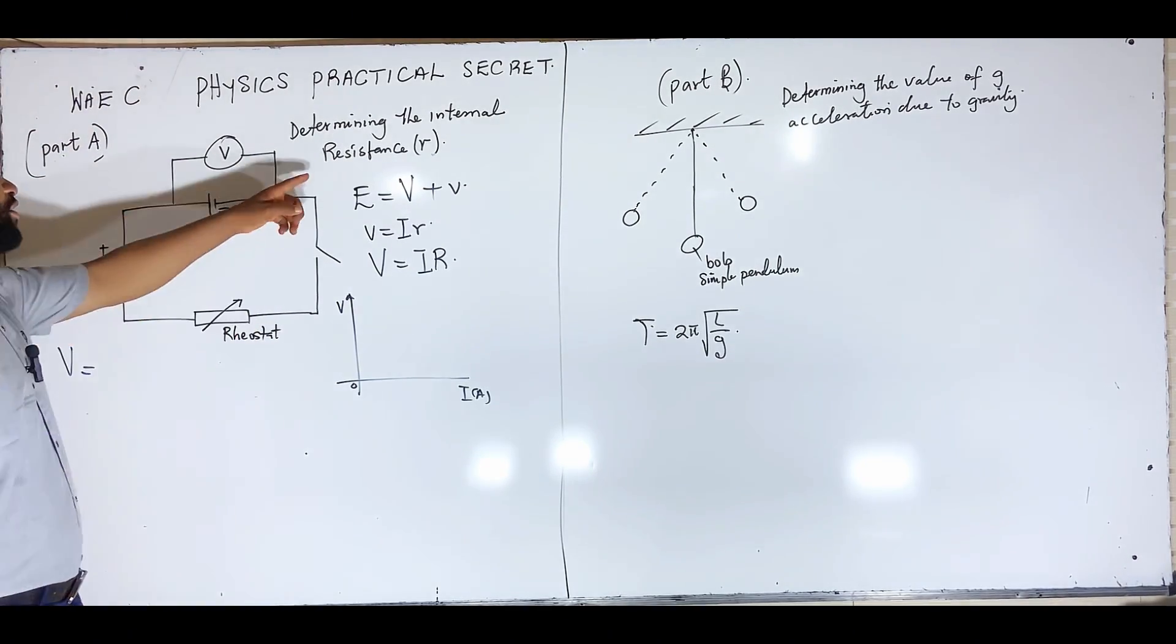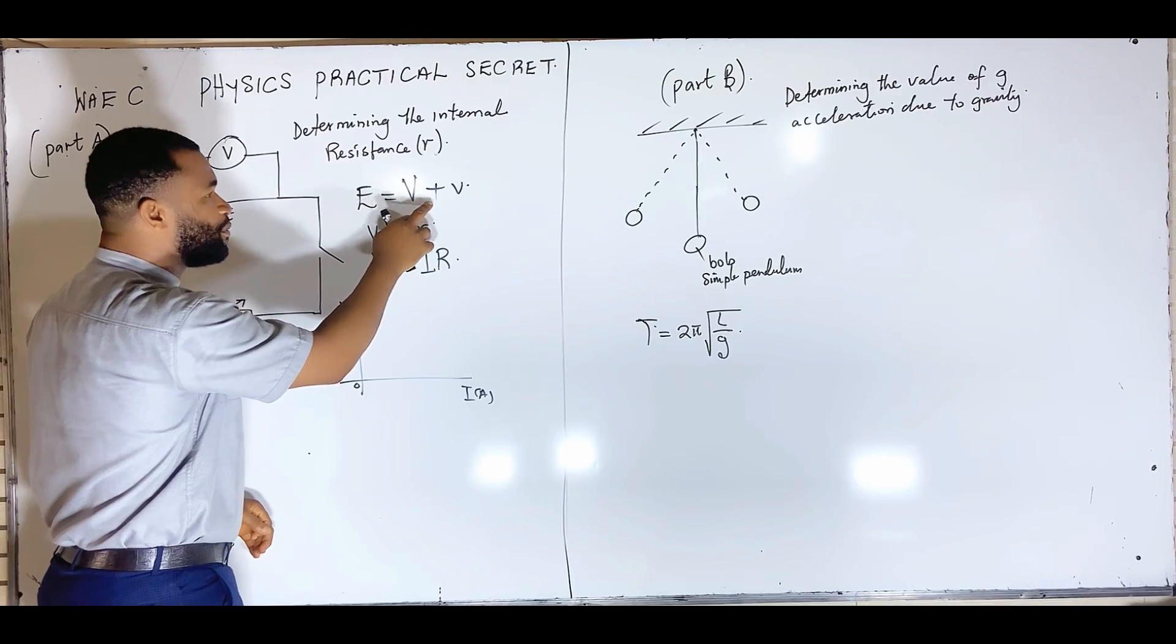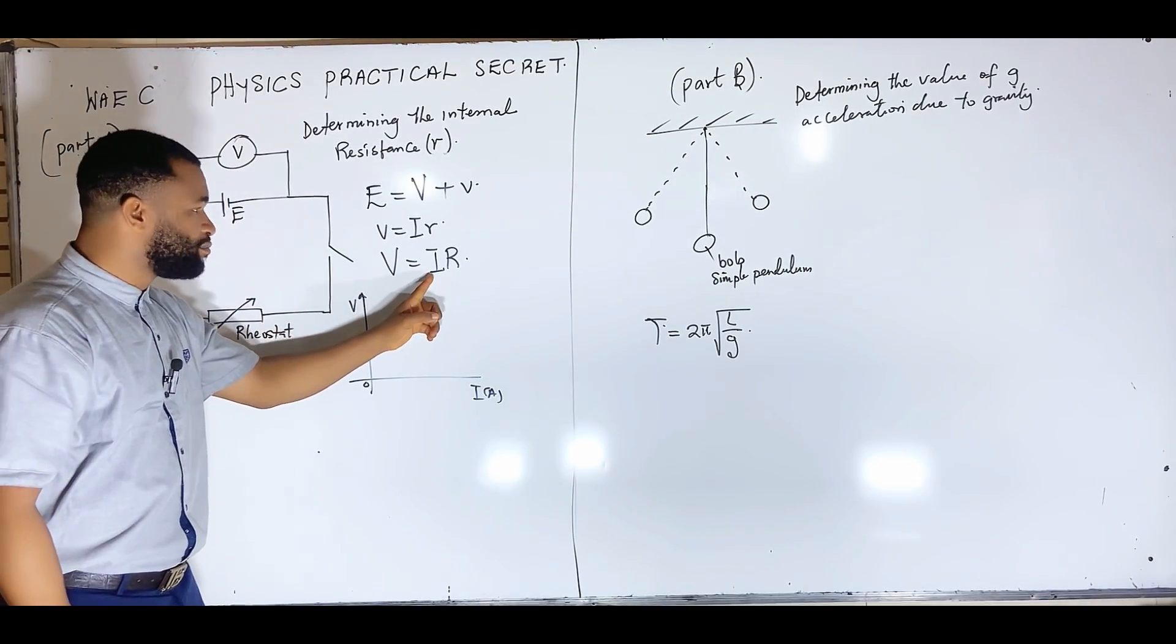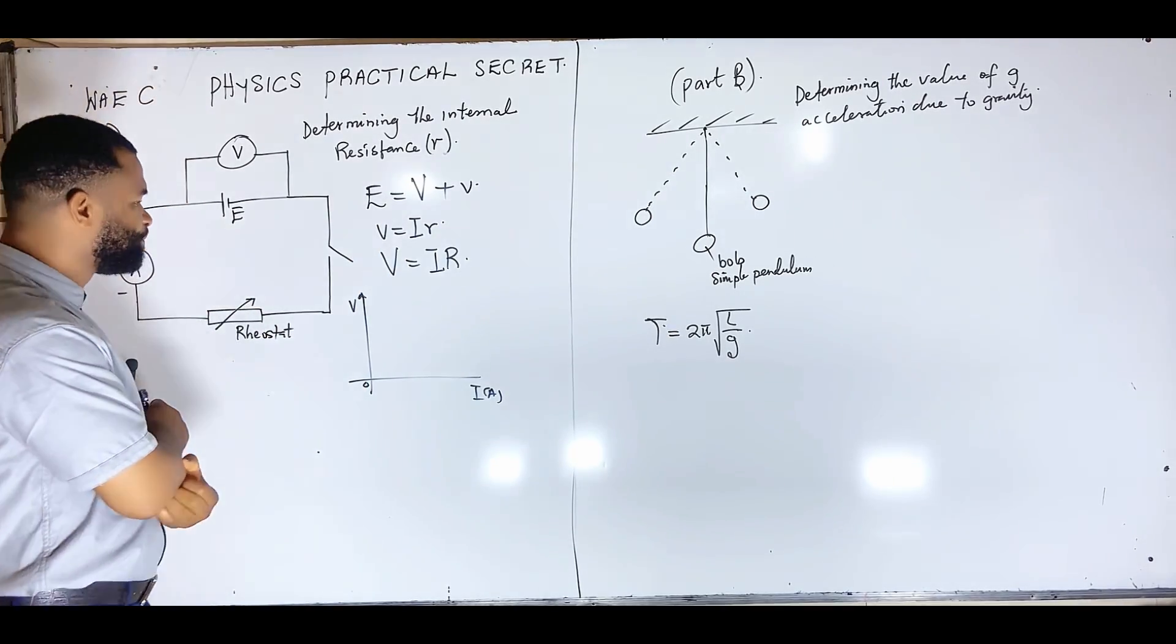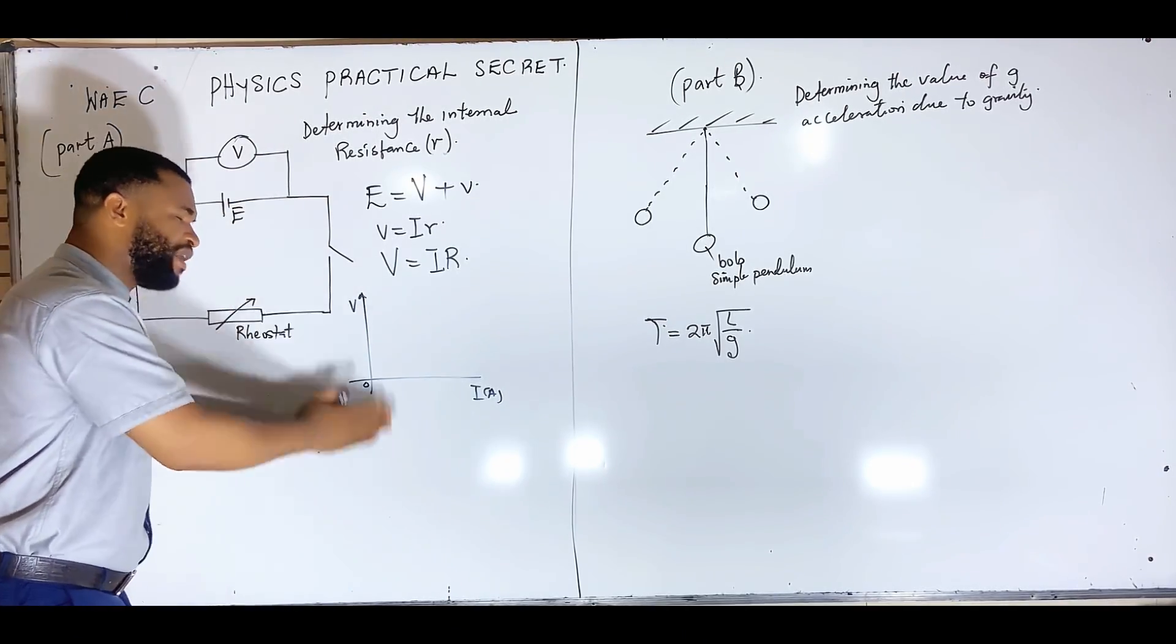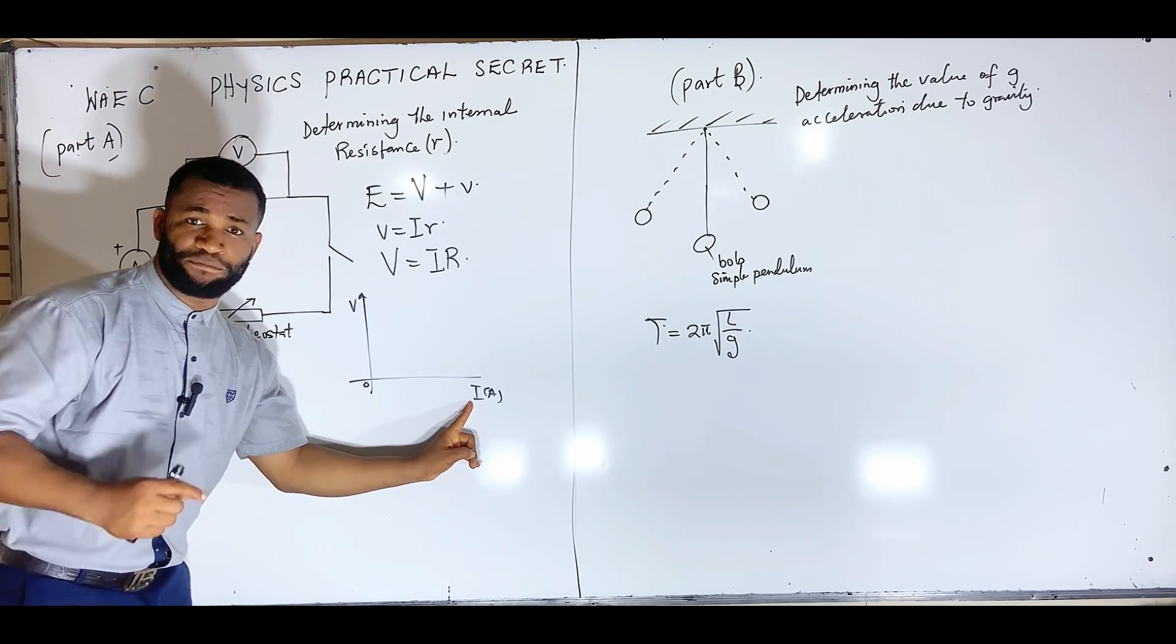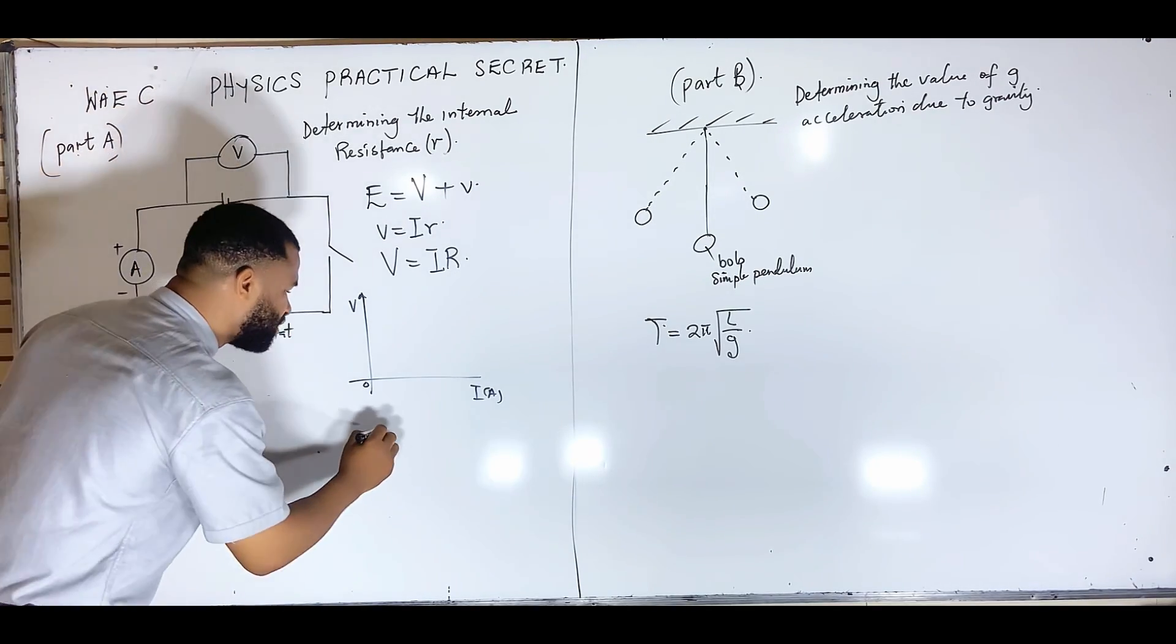Now let's assume you are asked to find internal resistance. The next formula that should be coming to your mind is E equal to capital V plus small V, where capital V is the potential difference and small V is the lost voltage. Capital V is given as IR by Ohm's law, and small V is also IR. Now the question is how will this graph look like? What will be my slope?